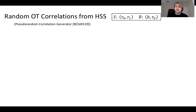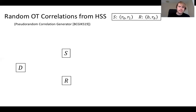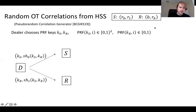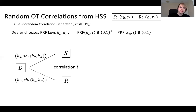What exactly is a random OT correlation? It's a correlation between two parties: the sender gets two random strings R0 and R1, the receiver gets a random bit B and one of the two random strings R_B. To generate many of these with a small dealer message, the dealer just chooses two PRF keys — one associated to the sender and one to the receiver. The sender's PRF key has output space in lambda-bit strings, whereas the receiver's just has one-bit output. The dealer uses HSS to share these two keys, and additionally gives the sender's key to the sender and the receiver's key to the receiver.